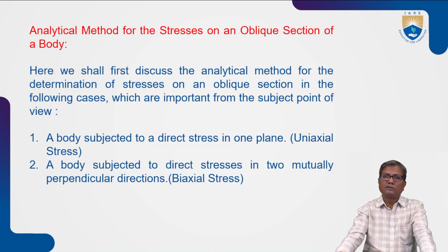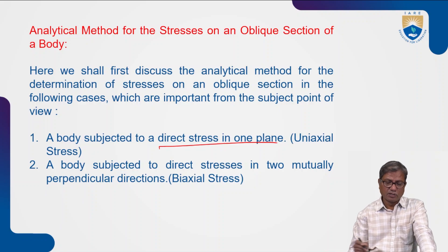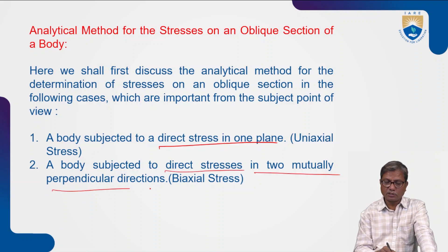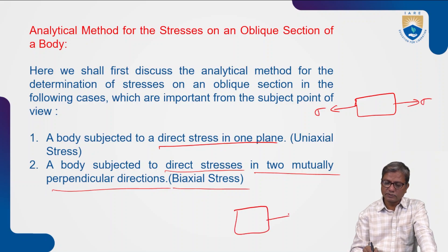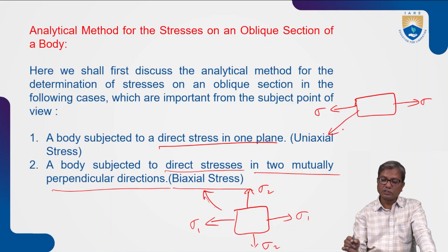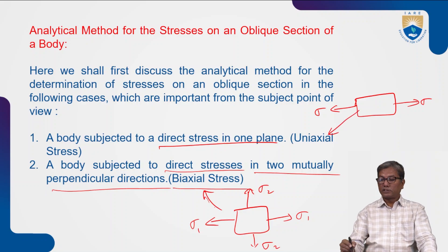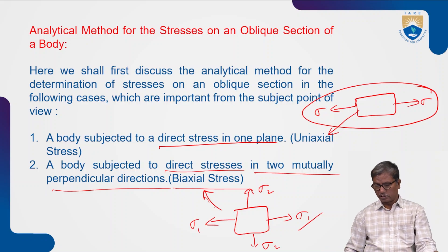The body which is subjected to direct stress in one direction is uniaxial, and direct stresses in two mutually perpendicular directions is biaxial. First we will see the case of a body subjected to uniaxial stresses, and after that we will discuss biaxial stresses also.